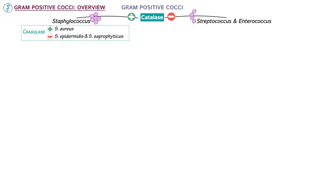Some strains of Staphylococcus aureus, which is named for its golden color, are resistant to the antibiotic methicillin. These strains are called MRSA. Infections caused by these strains are particularly difficult to treat.